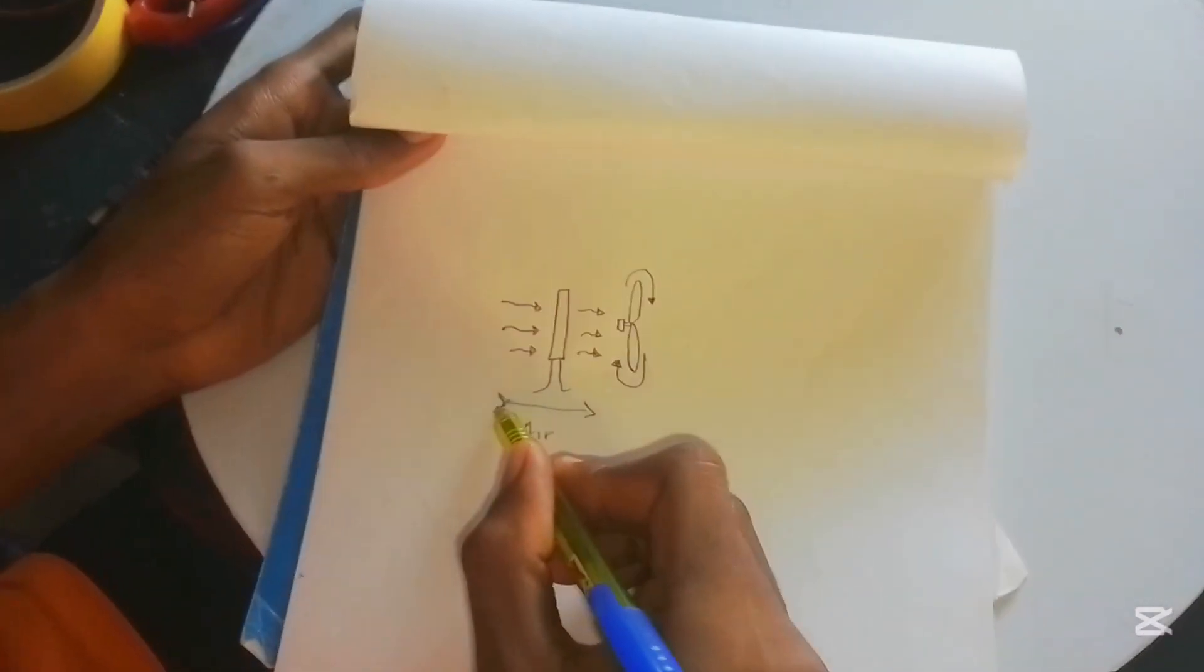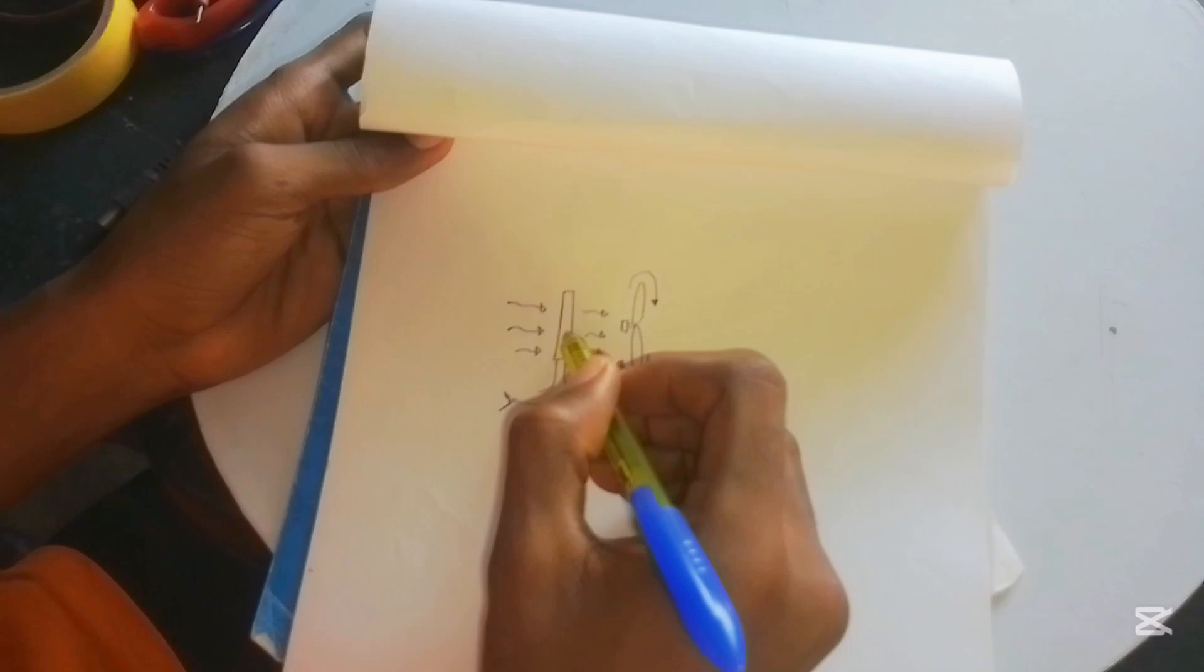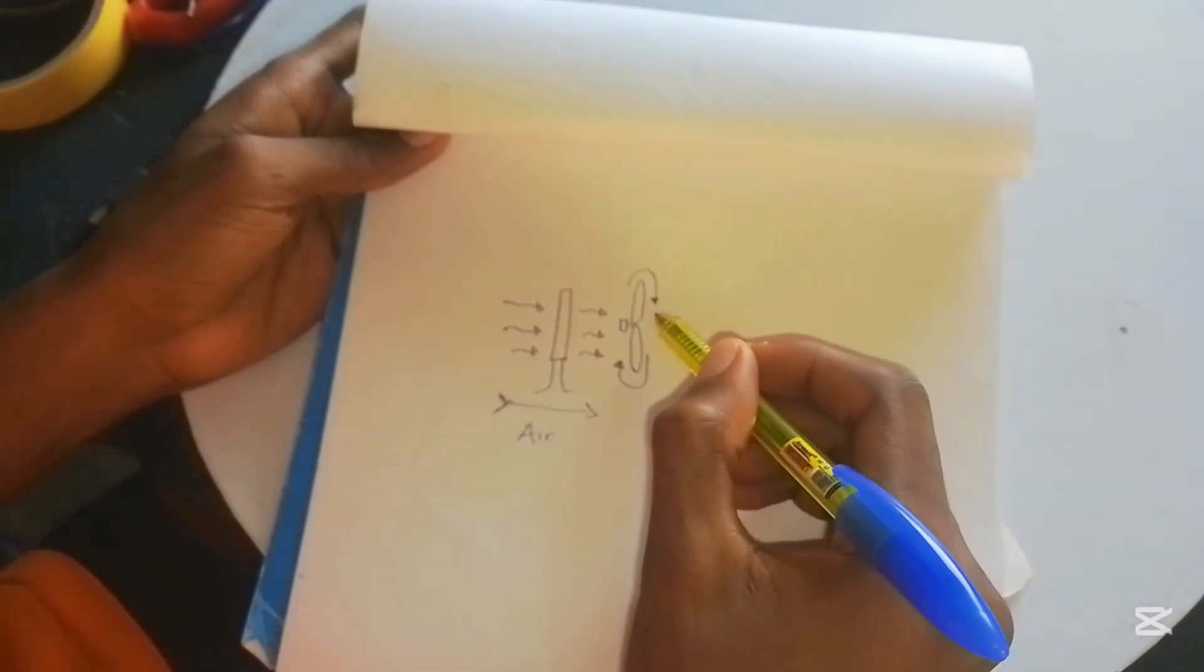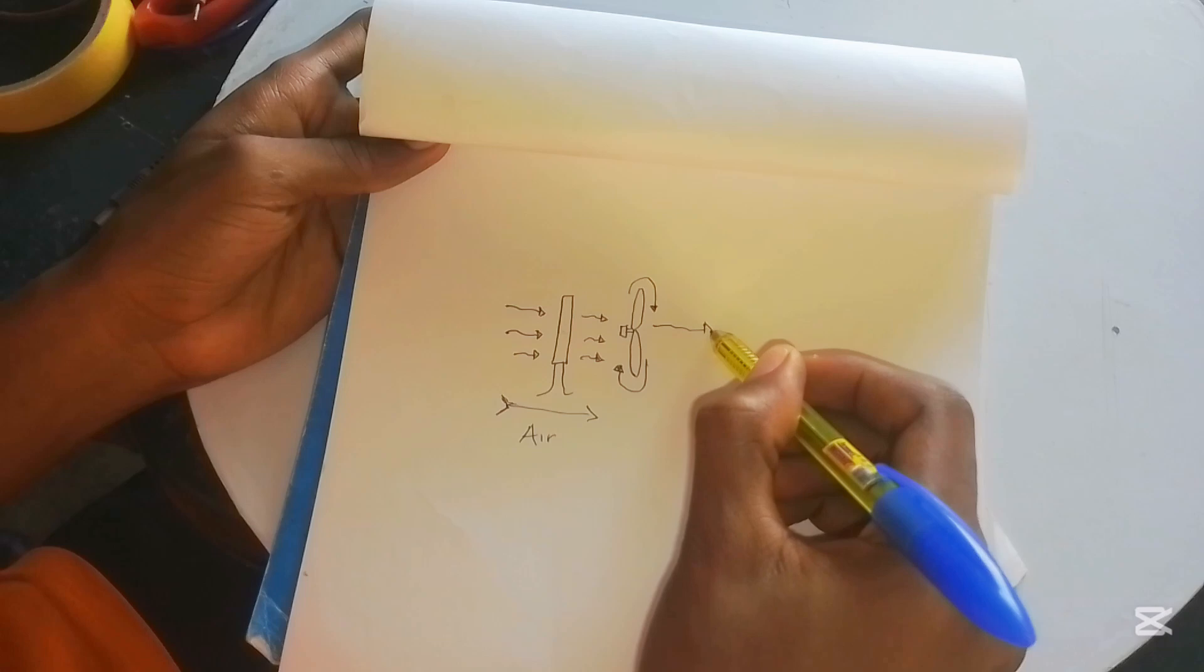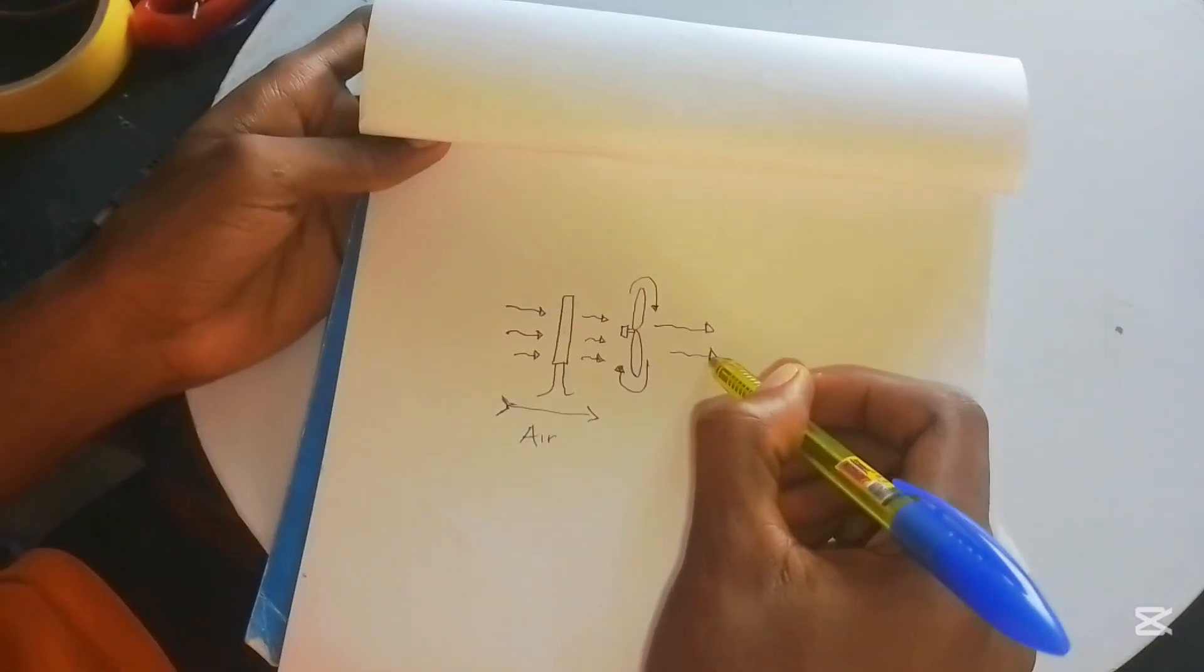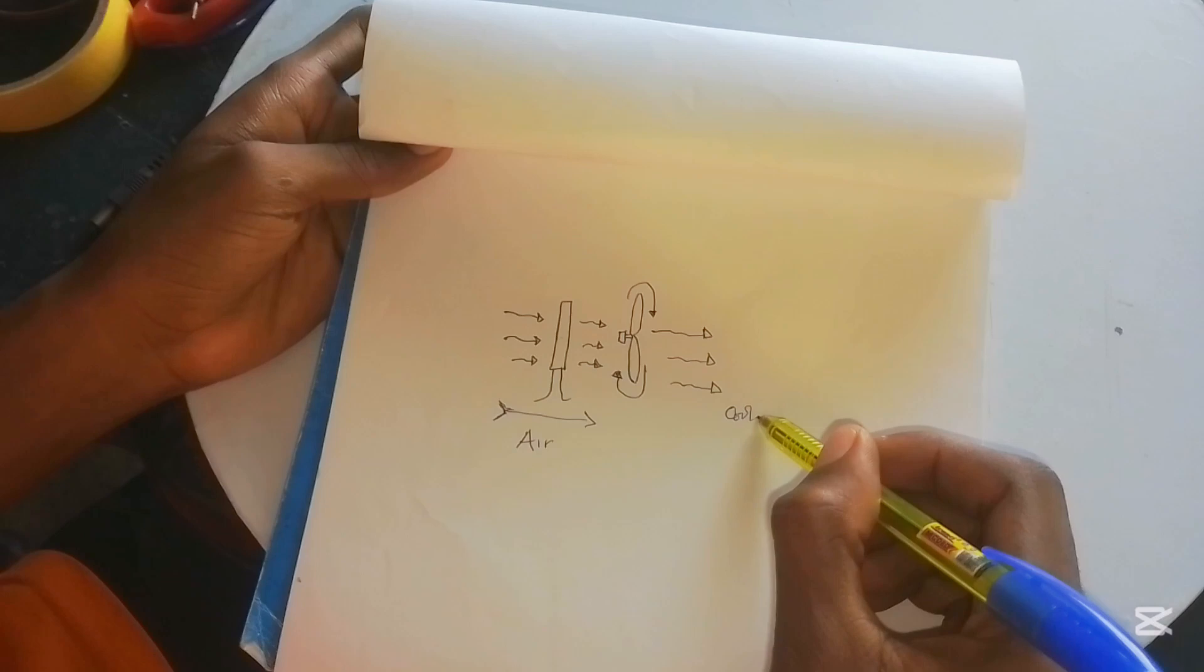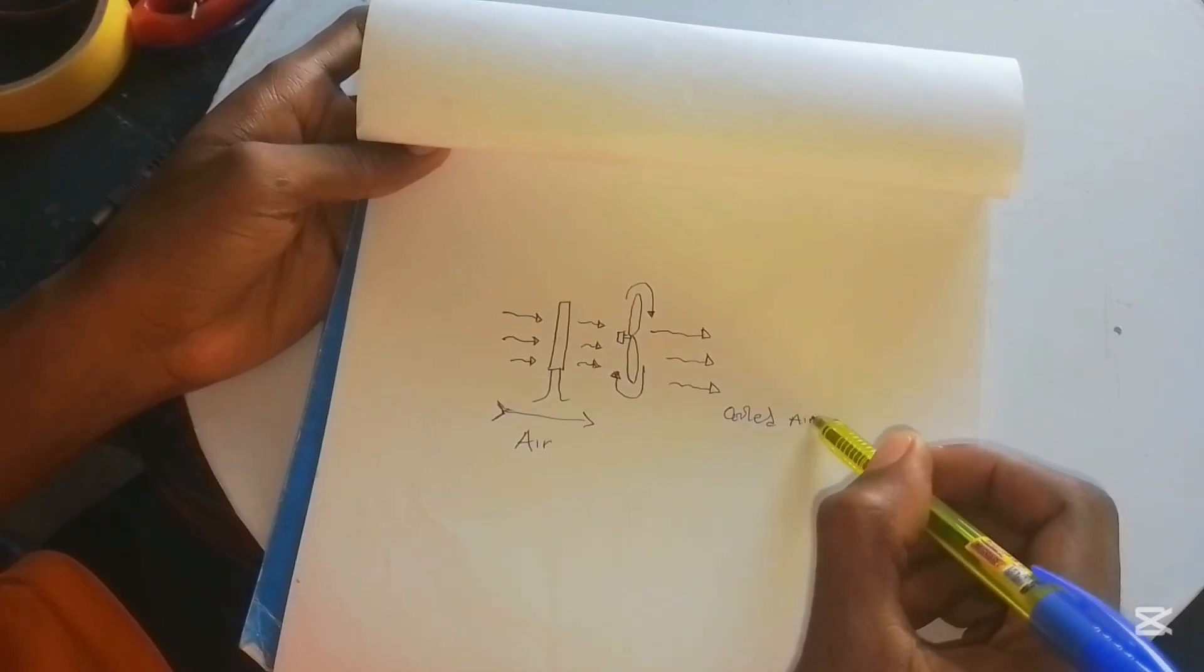When the air which it actually draws from those holes reaches the Peltier module coldness, it changes the temperature, then the fan blows it out at the other direction, thereby getting a cooler air on the output side of the fan. I hope you understand it. If you have any question, let me know in the comment section. Let's quickly go to the next one.